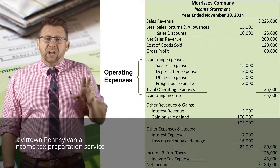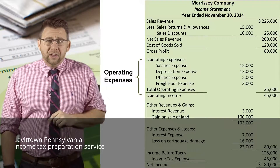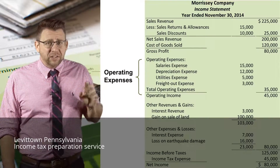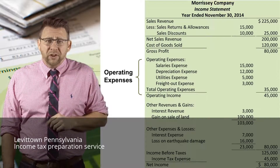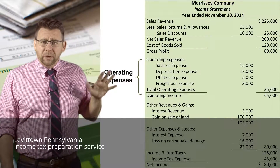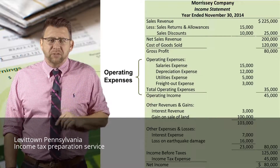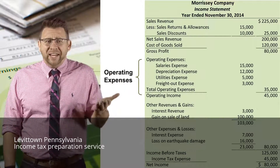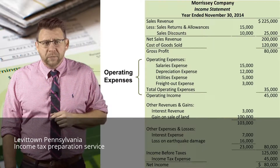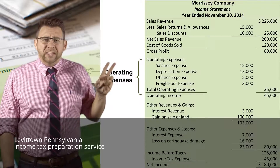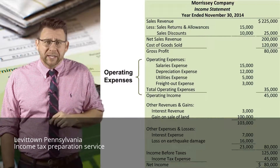The next section lists all of the operating expenses of a business. Not all expenses are listed here because not all expenses relate to operations. The most notable expense that doesn't belong in this section is interest expense, because interest expense relates to how a business finances its operations, not operates it. Operating expenses are deducted from gross profit to arrive at operating income.